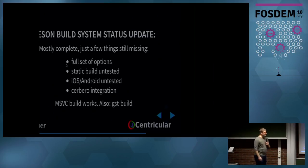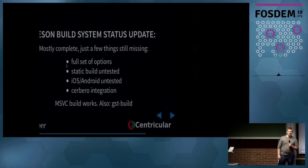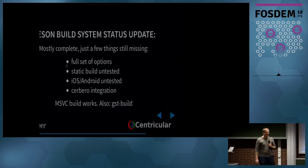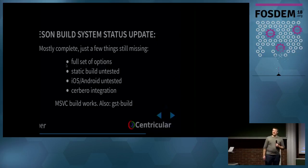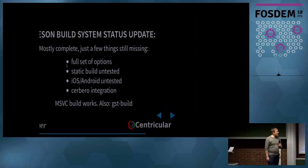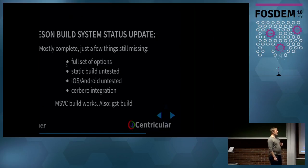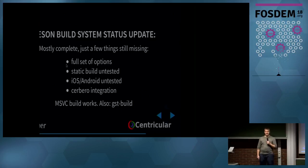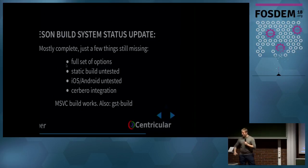Our current build system is Autotools but we're moving to Meson. Meson takes the best parts of CMake and improves upon them — we didn't like CMake. It has a very nice, maintainable description language that is not Turing complete. A key motivation was also getting a proper Microsoft Visual Studio build, which now works. We're going to switch to Meson fully and drop Autotools, but it still needs to be ready and work everywhere.